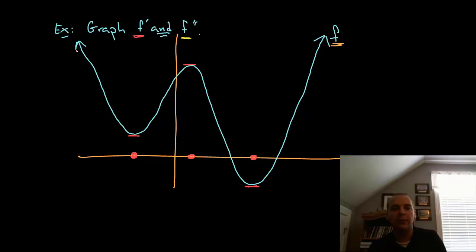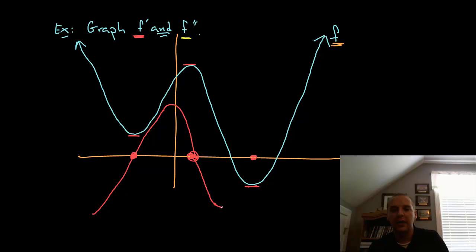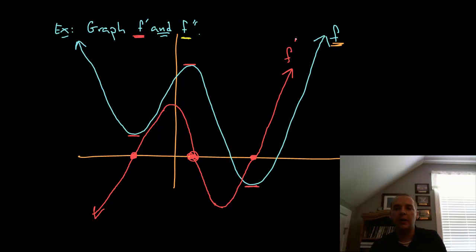Before this red dot the original function is decreasing, so the first derivative would be negative — I need to hang out below the x-axis. Between this red dot and this red dot the original function is increasing, so the derivative needs to stay above the x-axis. I'm below the x-axis, then above the x-axis, and I have to turn around at some point and come back to touch this root. Between the next two red dots the original function is decreasing, so the first derivative needs to go below the x-axis, and I turn around to get back to the next root. After this last red dot the graph is increasing, so I need to have positive slopes again. So the red graph right here would be f prime.